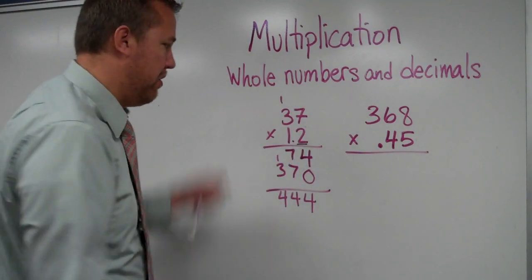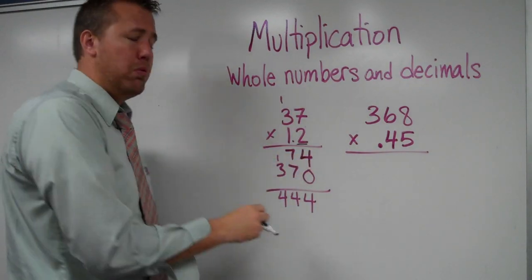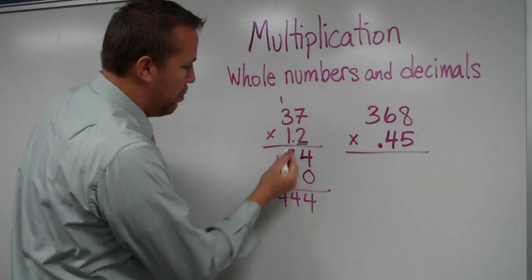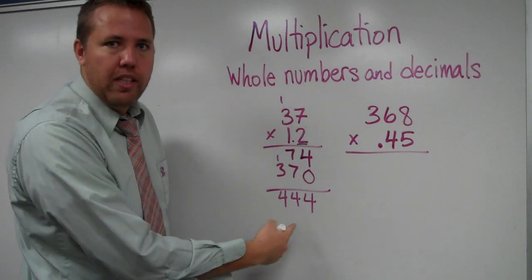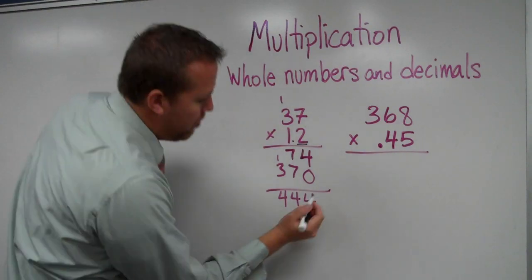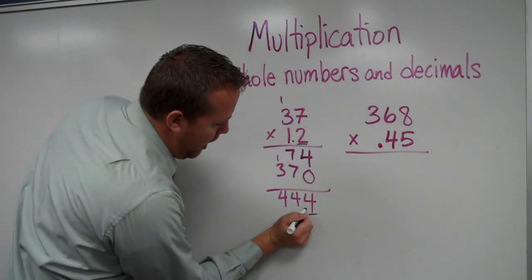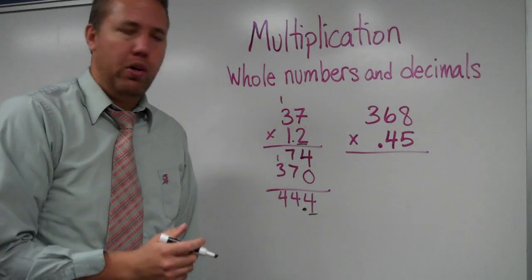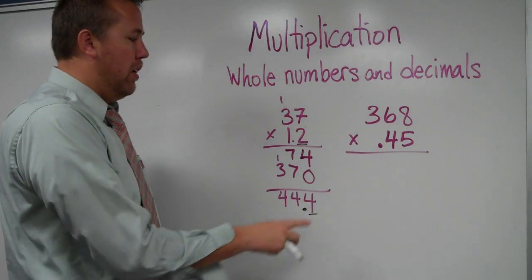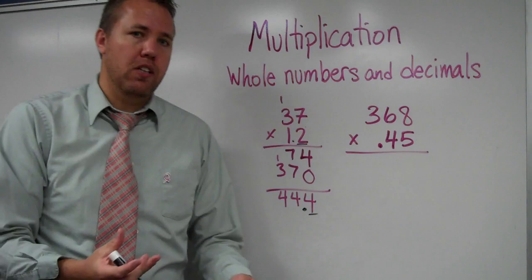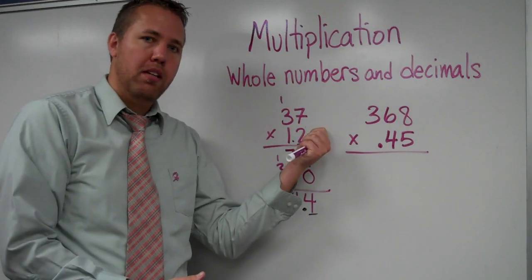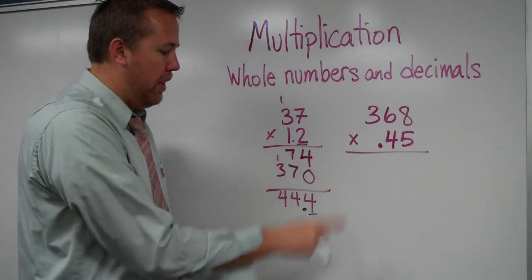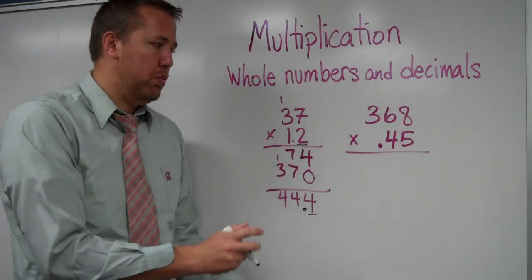So I just underline that to remind myself. One digit behind the decimal or to the right of the decimal in the problem. So it makes it really easy. One digit behind the decimal in the answer. So one digit, and then I put my decimal point right there. However many digits are behind or to the right of the decimal in the problem, same amount in the answer.